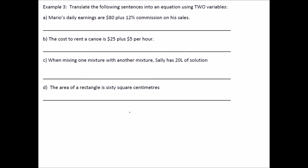Example 3: we're going to translate the following sentences into an equation using two variables. Mario's daily earnings — for earnings we use a capital E — are $80 plus 12% commission on sales, so 0.12 times S. E is earnings and S is the amount of sales.